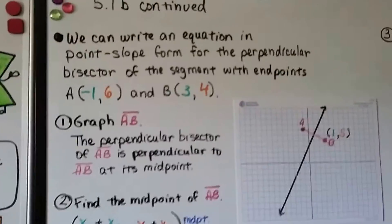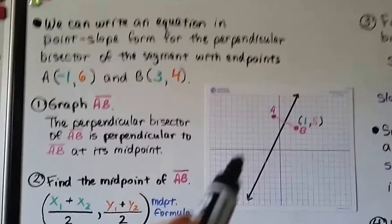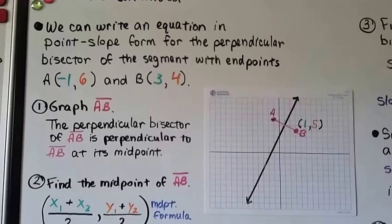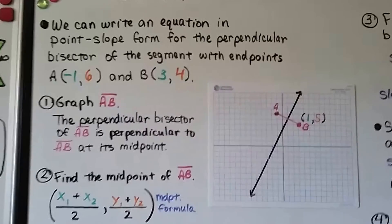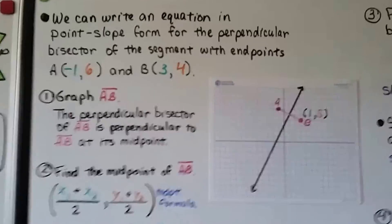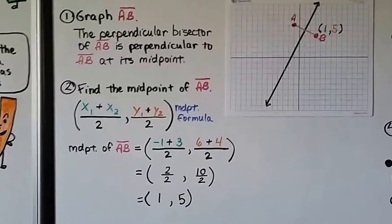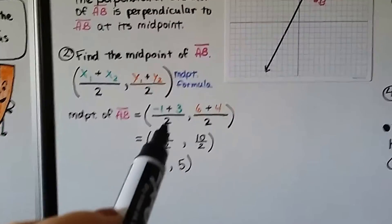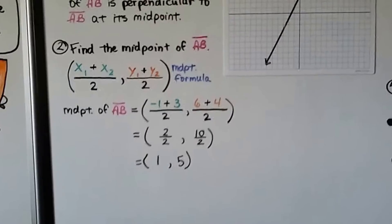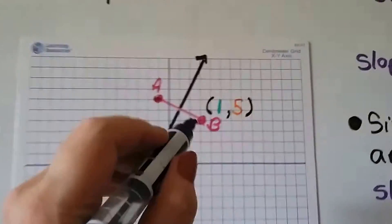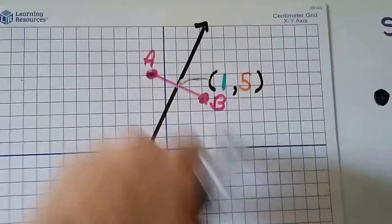We can write an equation in point-slope form for the perpendicular bisector of the segment with endpoints A at (−1, 6) and B at (3, 4). We graph segment AB. The perpendicular bisector of AB is perpendicular to segment AB at its midpoint. Finding the midpoint using the formula: (−1 + 3)/2 = 2/2 = 1, and (6 + 4)/2 = 10/2 = 5. So the midpoint is at (1, 5), which is right here on the graph.